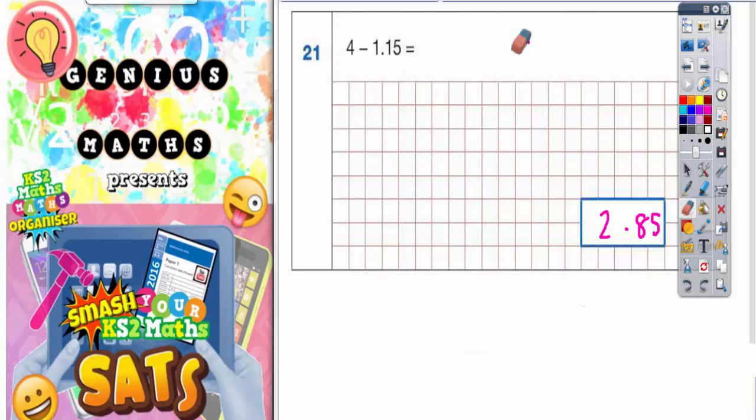If you didn't want to do it mentally and you were struggling with that you could do a written method. Remember 4 is the same as 4.00.